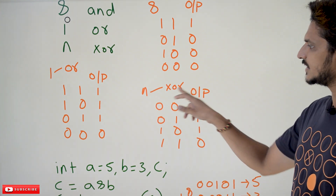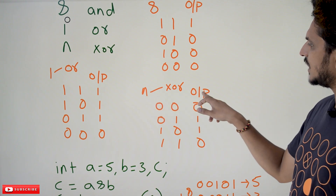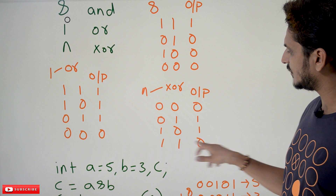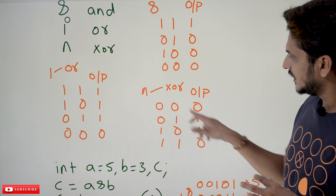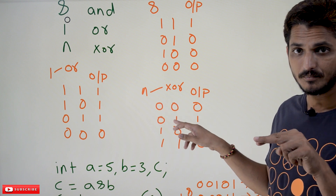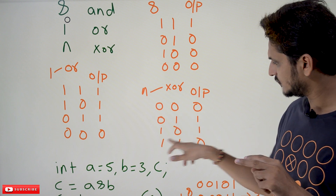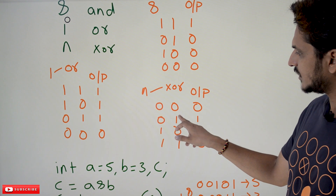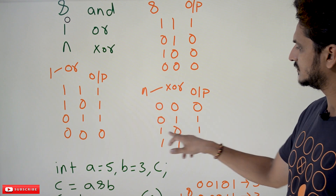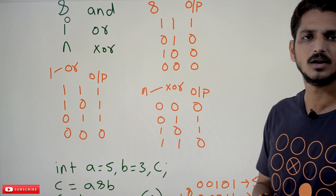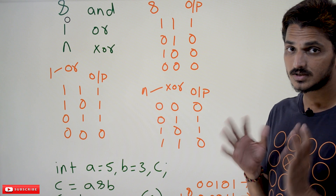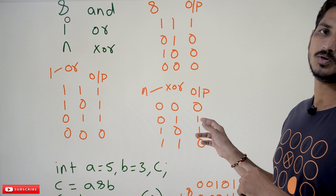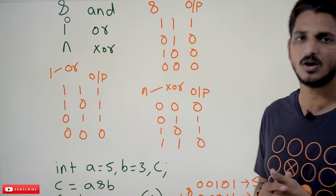Coming to XOR, exclusive OR operator — cap symbol. If both the bits are the same, the output will be zero: 0 XOR 0 = 0, 1 XOR 1 = 0. If the bits are different: 0 XOR 1 = 1, 1 XOR 0 = 1. So if both the bits are same, the output is zero; if they are different bits, the output will be one. This is how exclusive OR works.